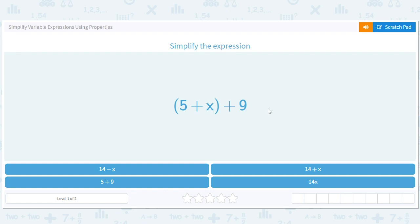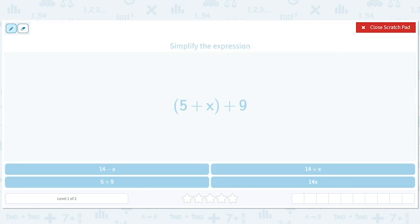There's no other way to say it. We're about to simplify variable expressions using properties. Alright, here we go. Five plus x plus nine. What are the properties we can use? Well, we could use the commutativity of addition, which is just we can change this to x plus five.